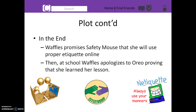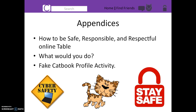In the end, Waffles promises Safety Mouse that she will use proper etiquette when online, and apologizes to Oreo at school, proving that she has learned her lesson. At the very end of the book, I added appendices that can help start conversations about online etiquette and to help reinforce what the story was teaching.